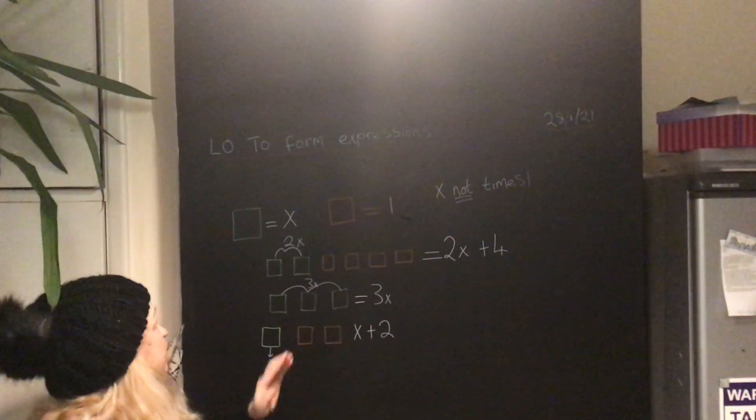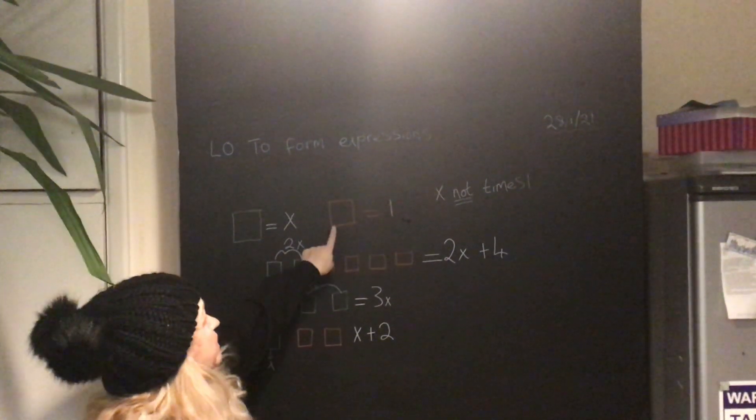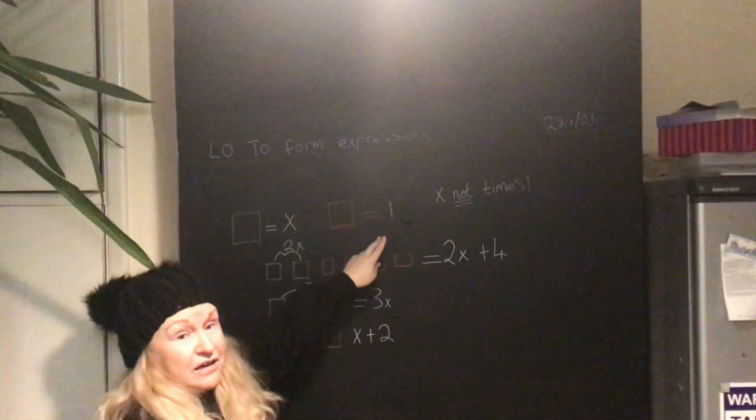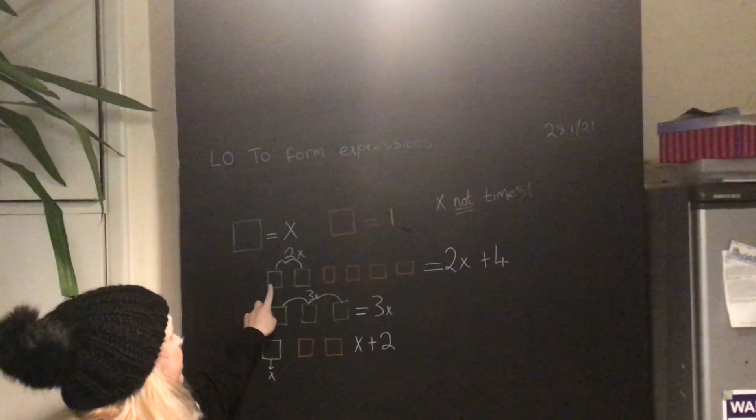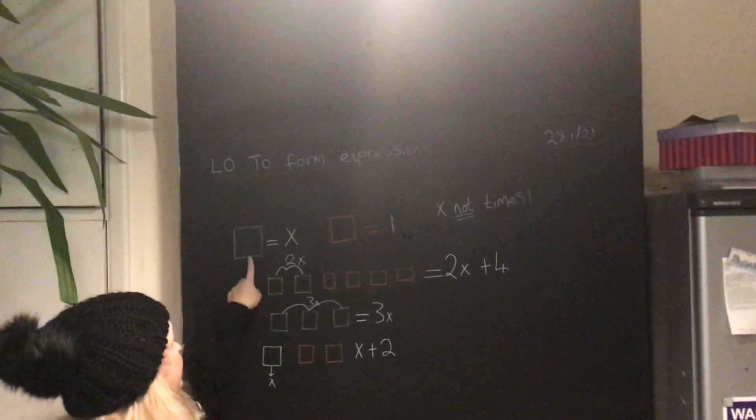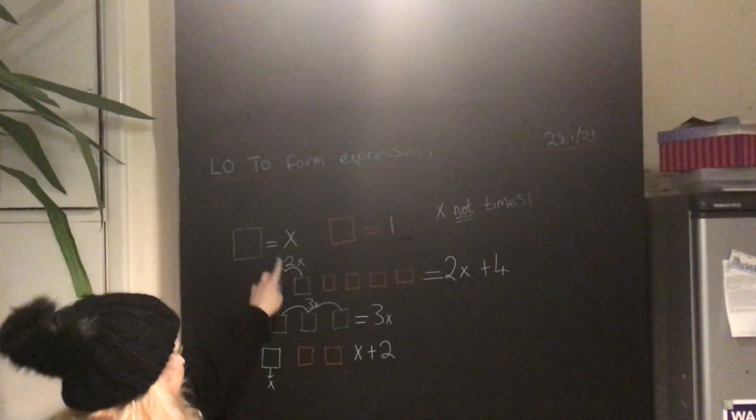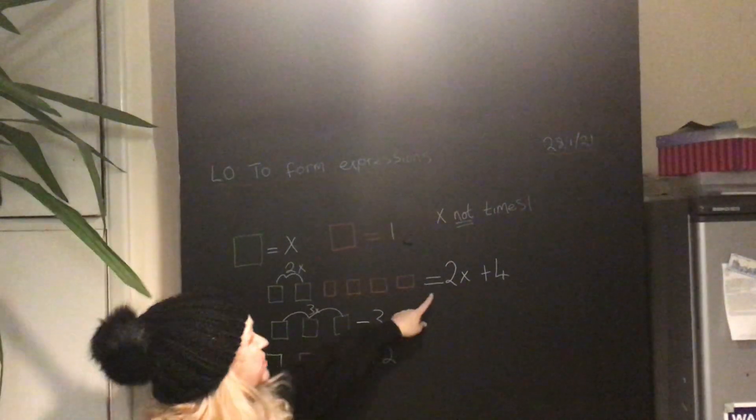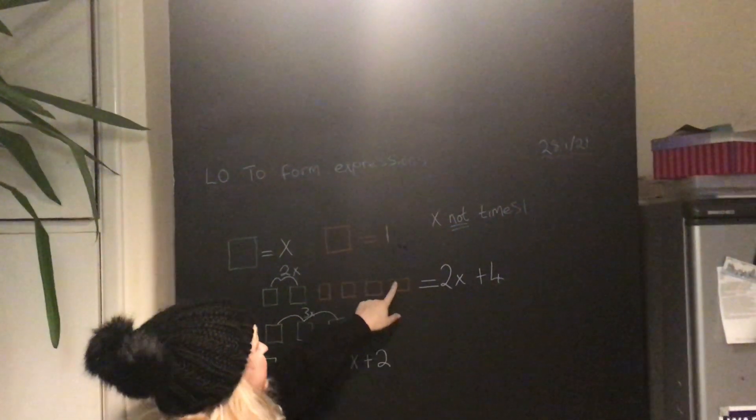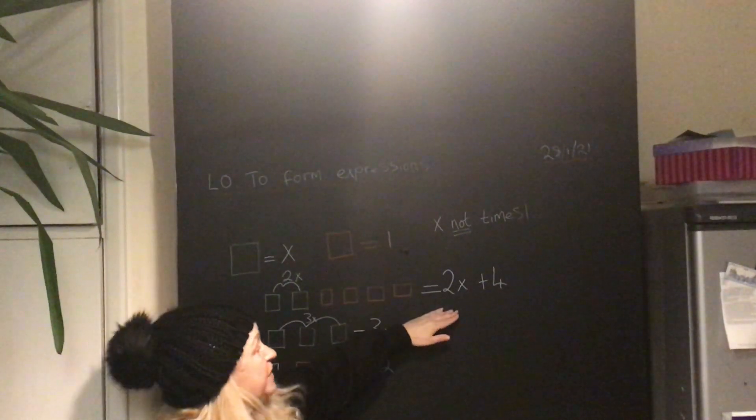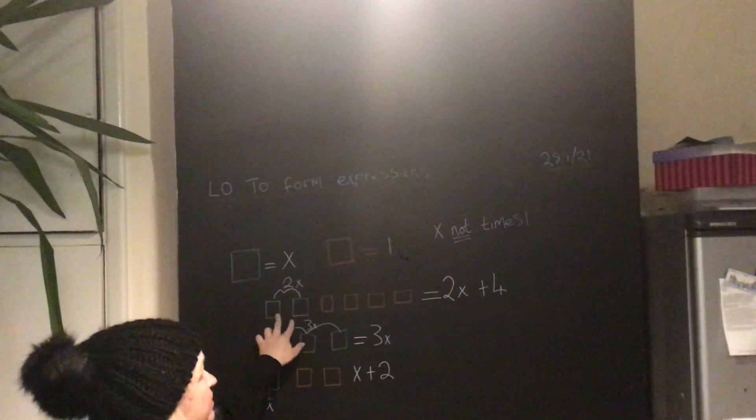My red square equals one. So look at my sum here. I've got two green squares, so if one of them is 1x, two is going to be 2x. Then I've got plus 1, 2, 3, 4 red squares, so my sum would be 2x plus 4.